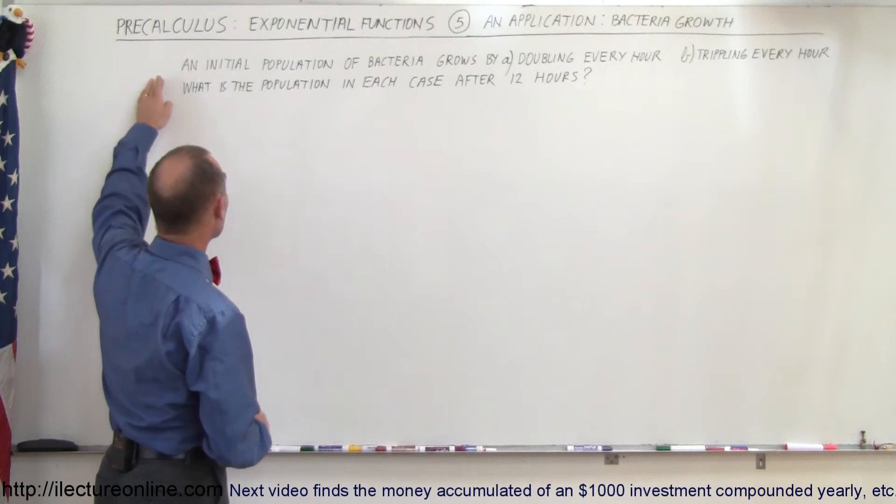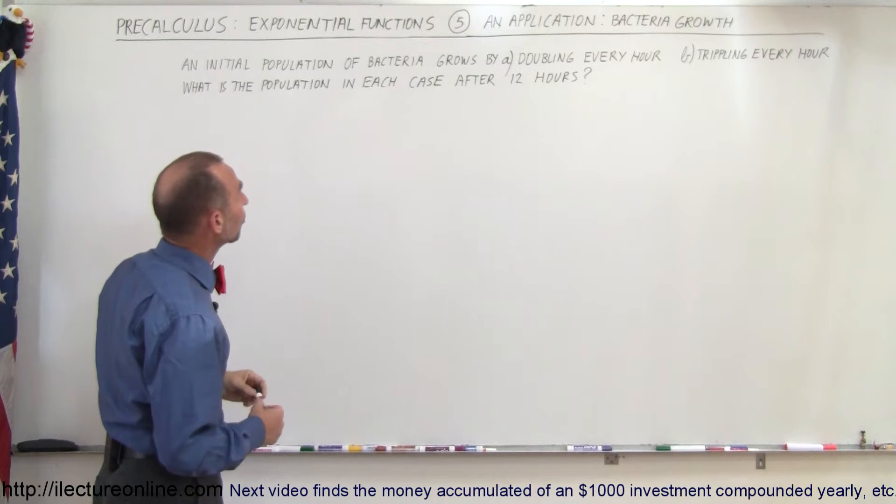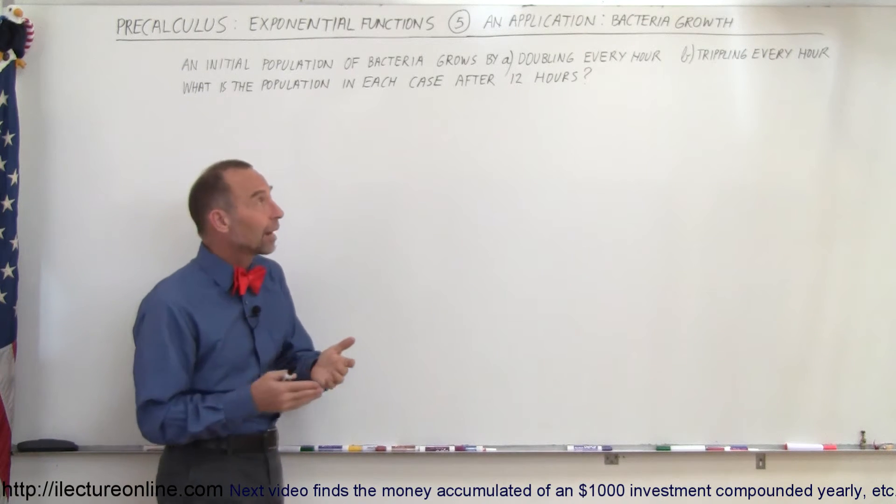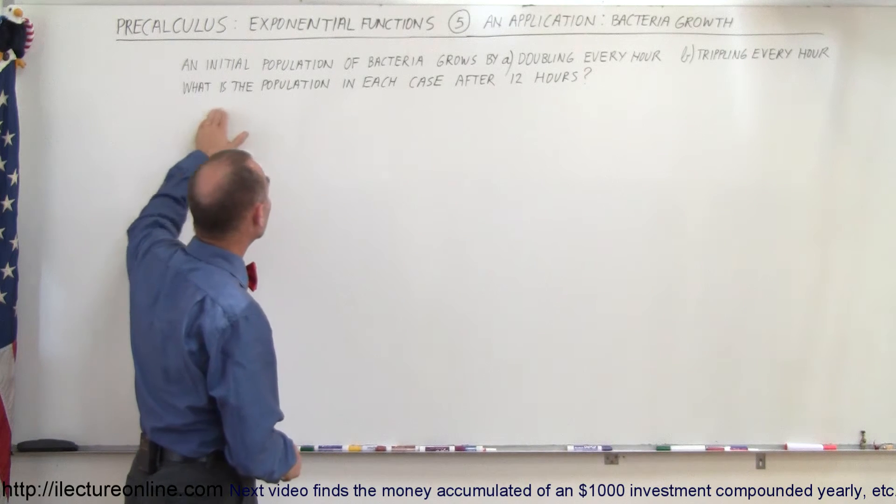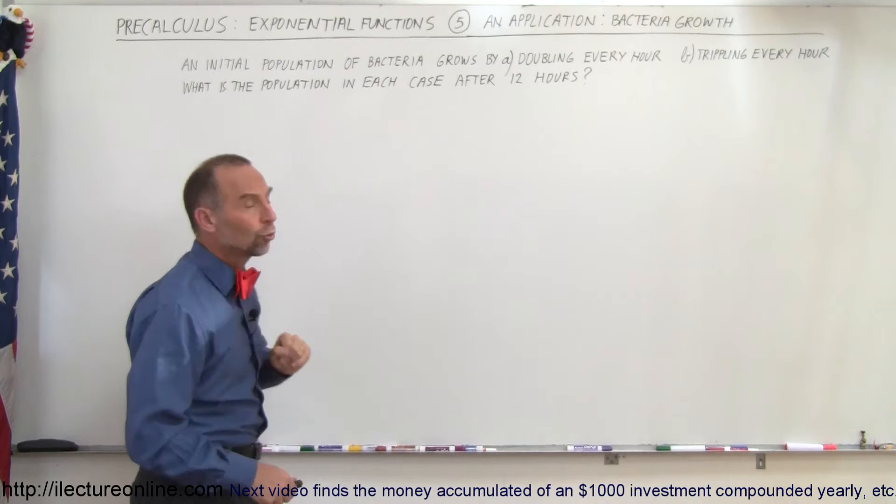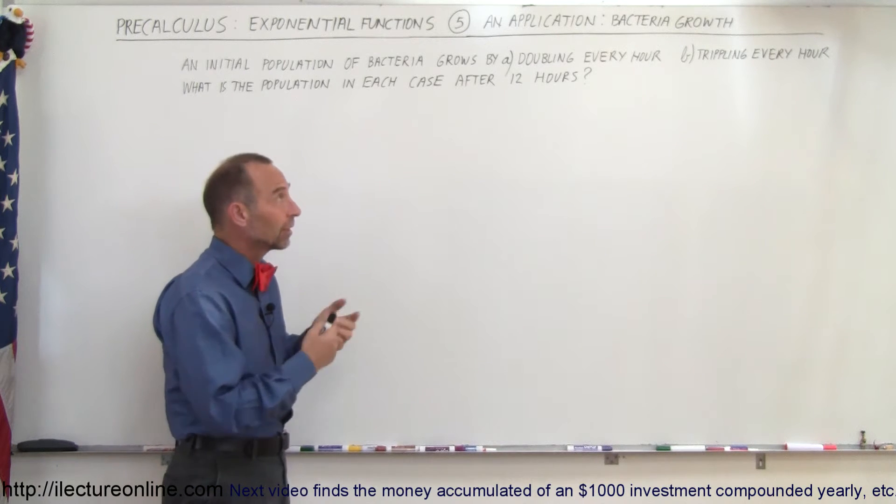Let's say we have a problem that says the following: an initial population of bacteria grows by either doubling every hour or tripling every hour. We need an equation using an exponential function to calculate that.